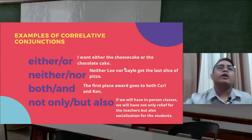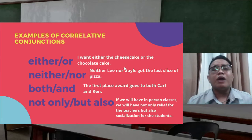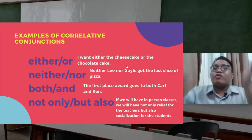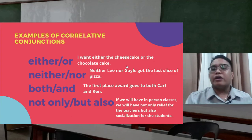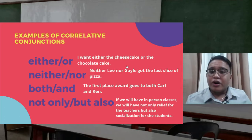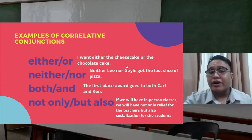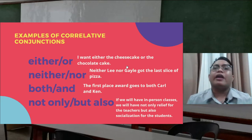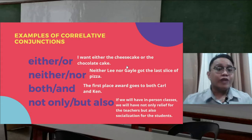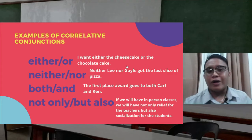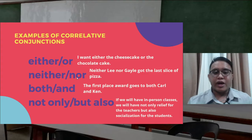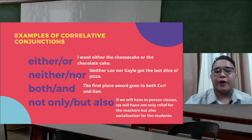Here are examples of correlative conjunctions. 'Either...or' means you are choosing between two things: 'I want either the cheesecake or the chocolate cake.' 'Neither...nor' is the opposite — you are rejecting both options: 'Neither Lee nor Gail got the last slice of pizza,' meaning neither of them got it. 'Both...and' establishes a connection: 'The first place award goes to both Carl and Ken.'